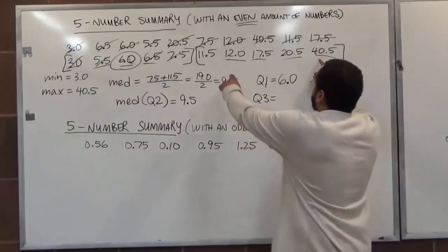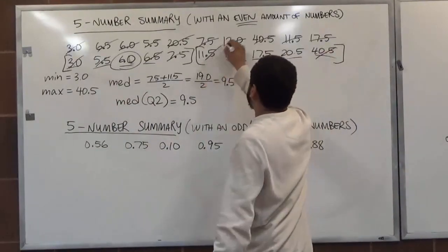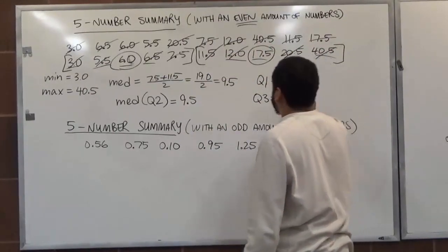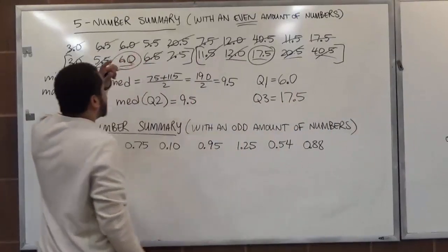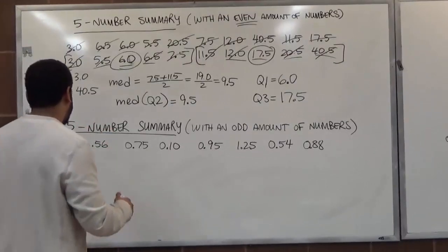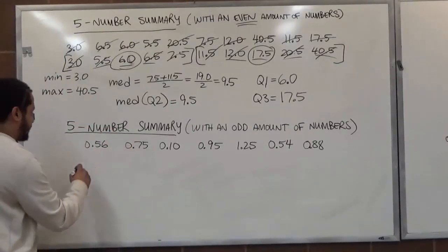For our Q3, we do the same thing with this data, we knock off two at a time, and we get 17.5. And that's our first five-number summary where we have an even amount of numbers. Now when we have an odd amount of numbers, it makes everything a little different. So we'll start by arranging all this data in order as well.